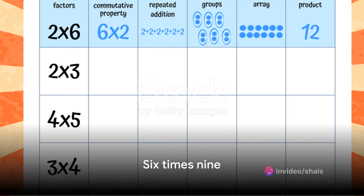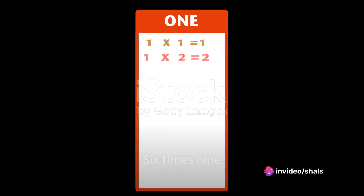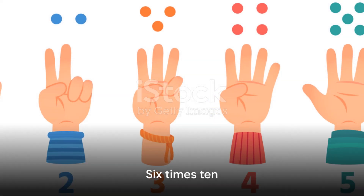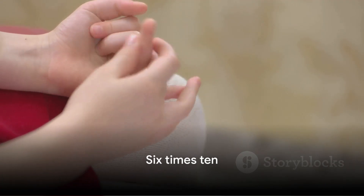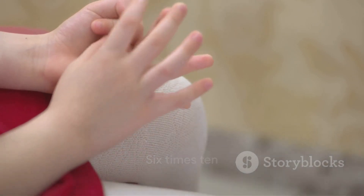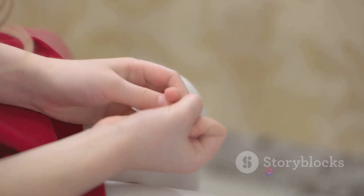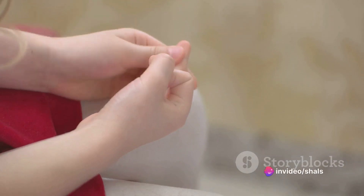Next, six times nine equals fifty-four. Imagine having nine groups of six. Counting all the items, you'll discover that there are fifty-four. Finally, six times ten equals sixty. It's like having ten groups of six. Counting all the items, you'll see that they add up to sixty.